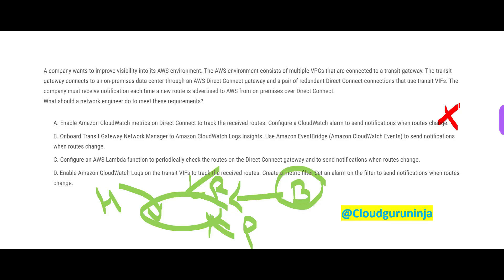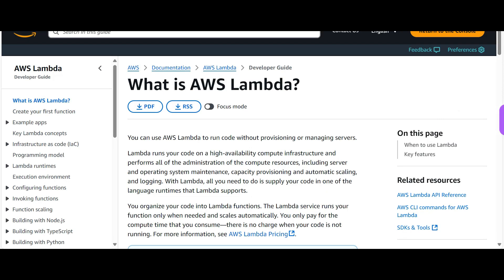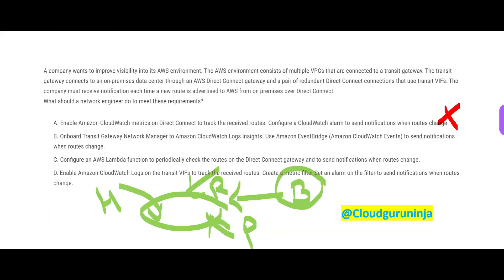Option C also looks wrong because it uses Lambda to create custom code for alerts. The certification always tests whether you know AWS's built-in alert product, which is CloudWatch. Why would we use Lambda to create a new solution when CloudWatch is available? It is like knowing a knife is available to cut fruits and vegetables, but someone says let's use a sword instead. Option C is wrong.